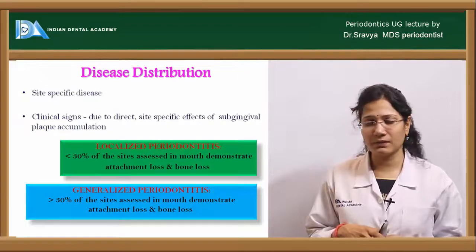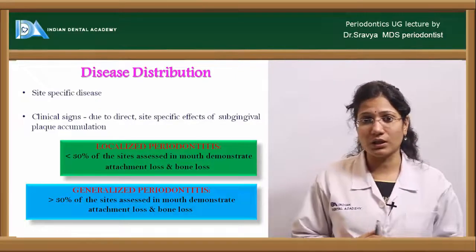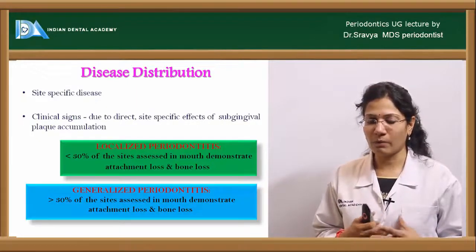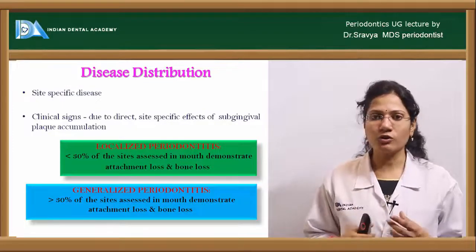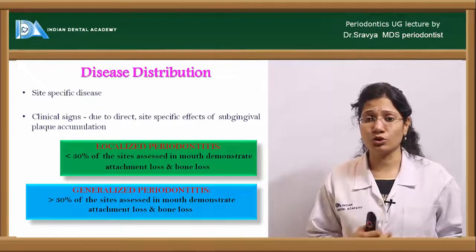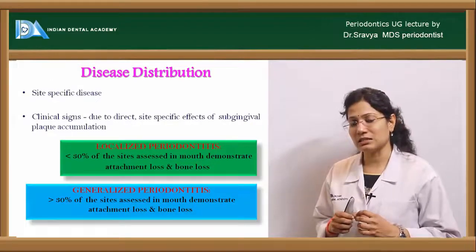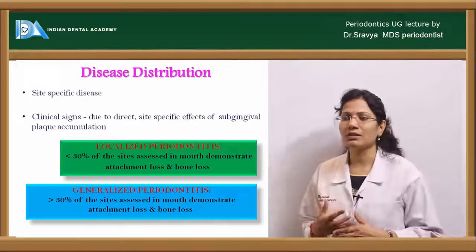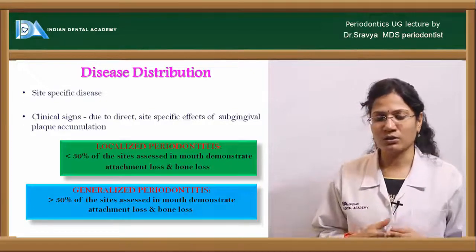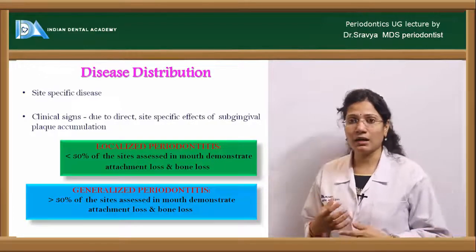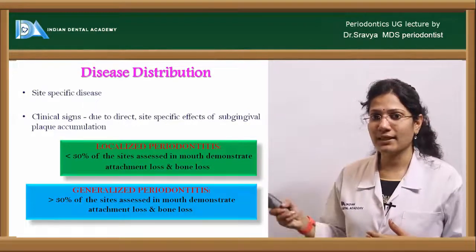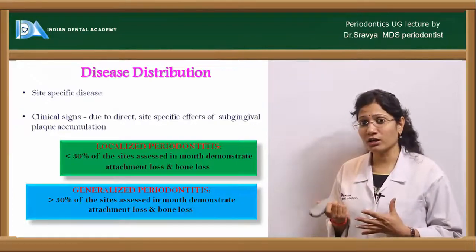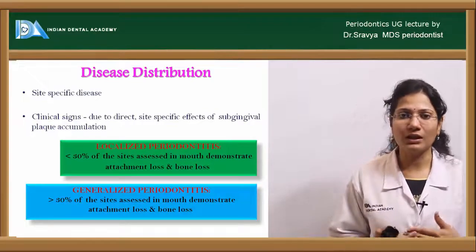The age of onset and rate of progression are influenced by genetic and environmental factors. Chronic periodontitis is a site-specific disease — clinical signs are directly related to sites where disease has progressed, and are directly related to subgingival plaque accumulation. Based on disease distribution, it is classified as localized (less than 30% of sites affected with attachment and bone loss) or generalized (greater than 30% of sites involved).